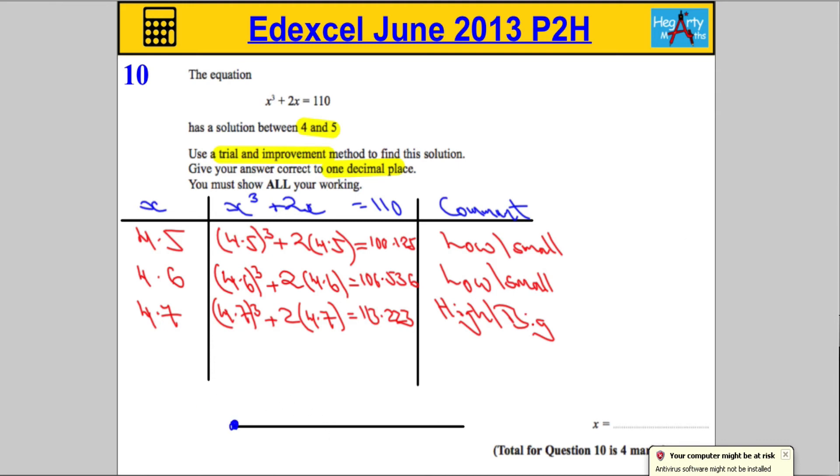So I know that the number 4.6 is too low or too small as a solution. I know that the number 4.7 is too big as a solution, but I'm not entirely sure exactly which one to pick. So what I'm going to do is we're going to do a little test. This is important. We're going to test the number 4.65. We're going to go right bang in the middle between the two.